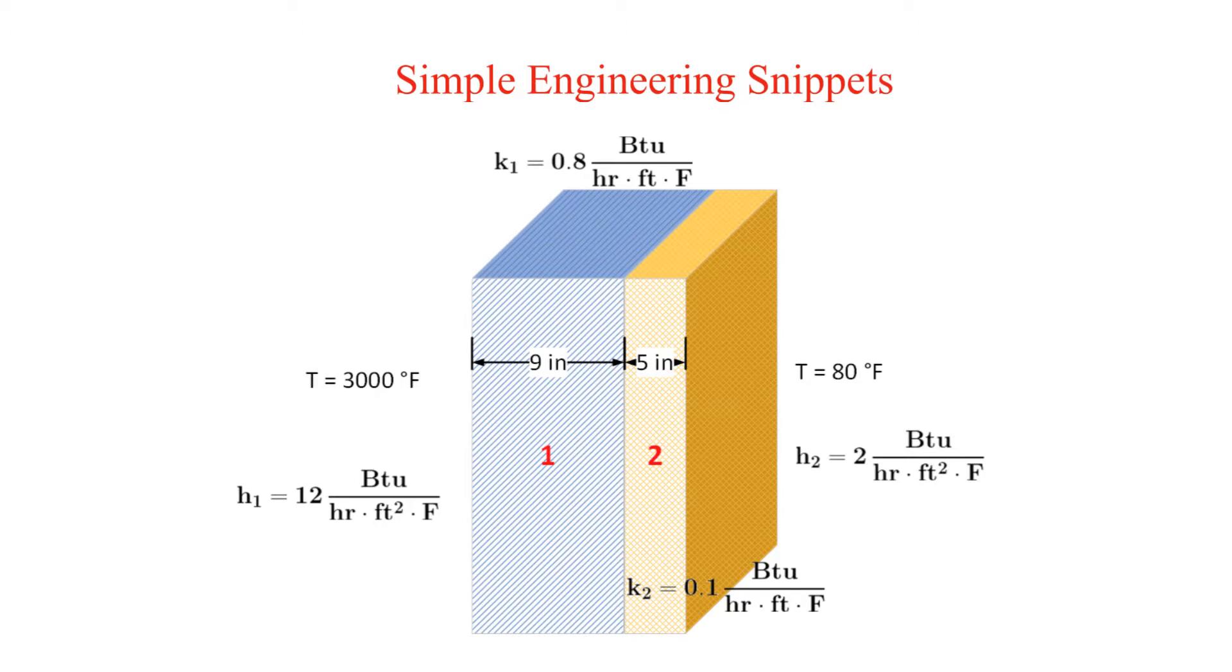It will become clear when we define the resistance network that there is perfect contact between the two slabs. In other words, we will not be including a contact resistance in the thermal resistance network.